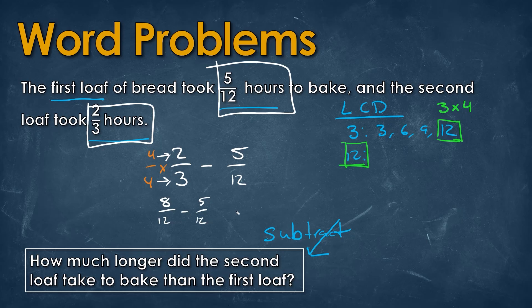When we subtract these fractions we always keep the same denominator of 12 and just subtract the numerators: 8 minus 5 gives us 3. So our answer is 3 over 12 hours more.